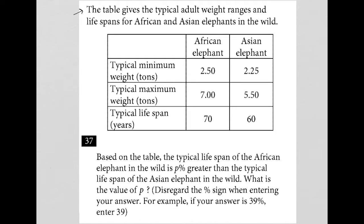This question starts off by saying that the table gives the typical adult weight ranges and lifespans for African and Asian elephants in the wild. From the table, we have African elephants in the first column and Asian elephants in the next column, with minimum weight, maximum weight, and lifespan. The typical lifespan of the African elephant in the wild, which we can see from the table, is 70. The typical lifespan of the Asian elephant in the wild is 60.